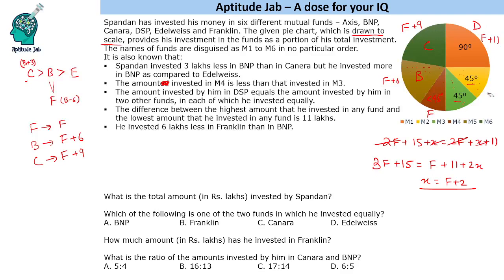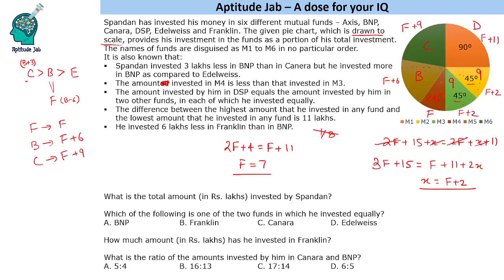Since the two equal parts are x each, equating both sides: 3f + 15 = f + 11 + 2x, which gives x = f + 2. So the equal parts are f + 2. Now this sector is 45 degrees, which is one-eighth of the pie, and this is 90 degrees, one-fourth. So 2(f + 2) = f + 11, giving f = 7.